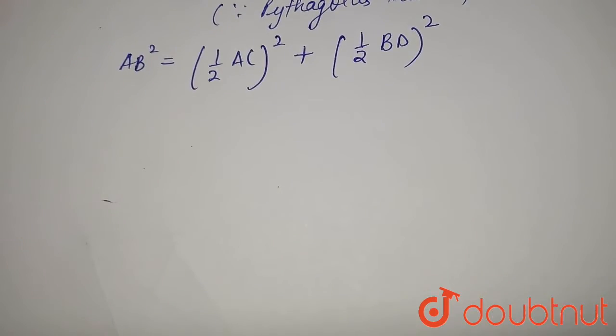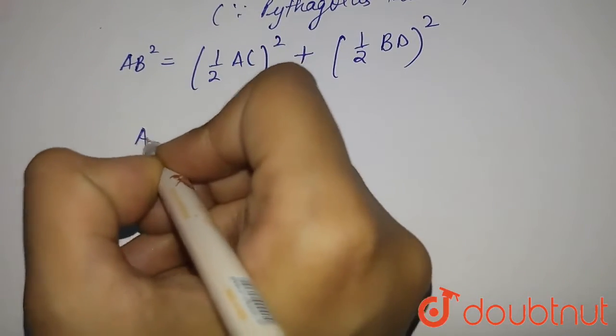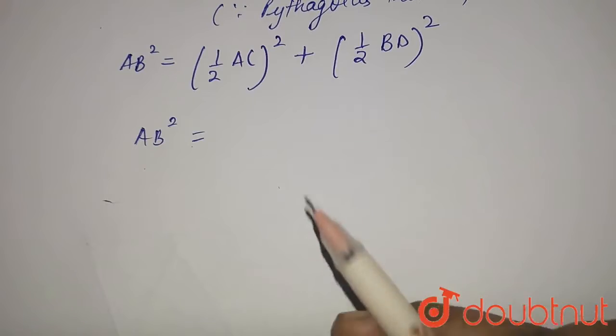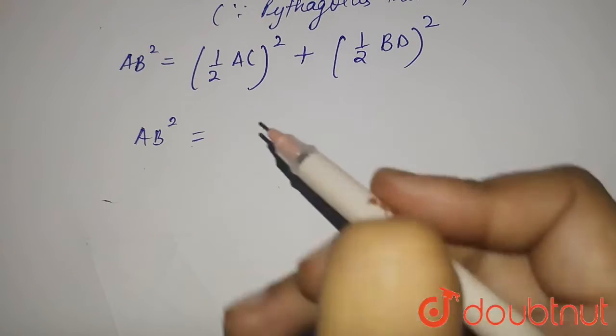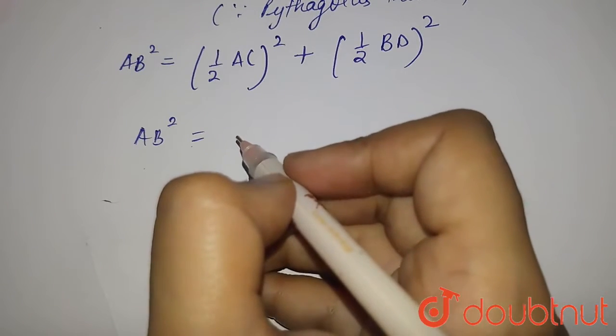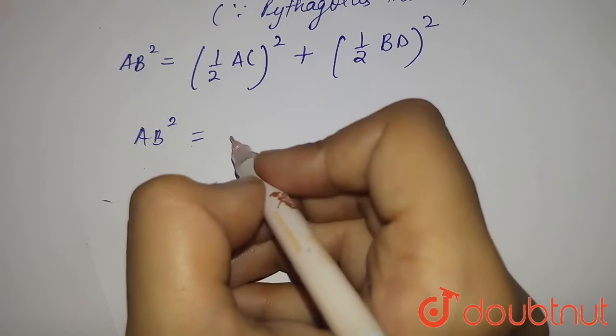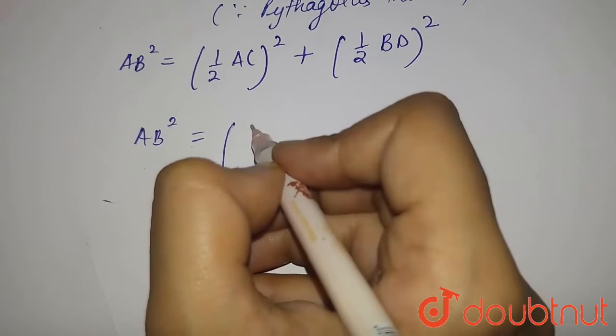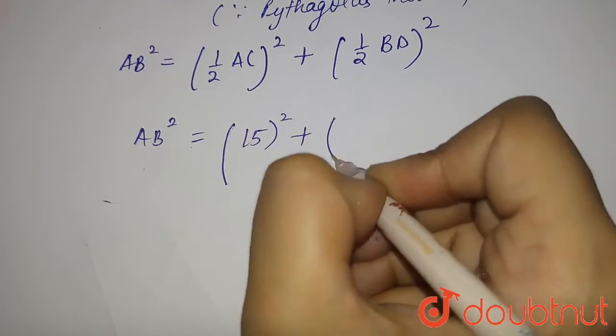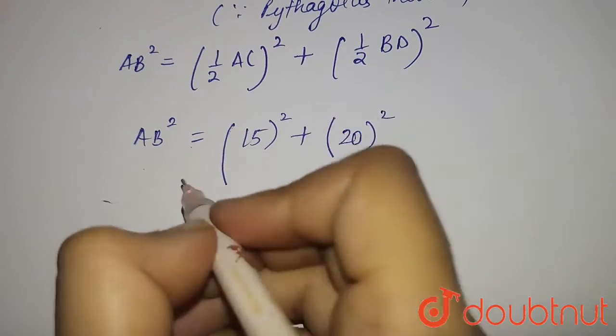So now further solving it, we will get AB² equals half of AC which is 15. That's AO. AC is 30. So, we will get 15² plus 20².